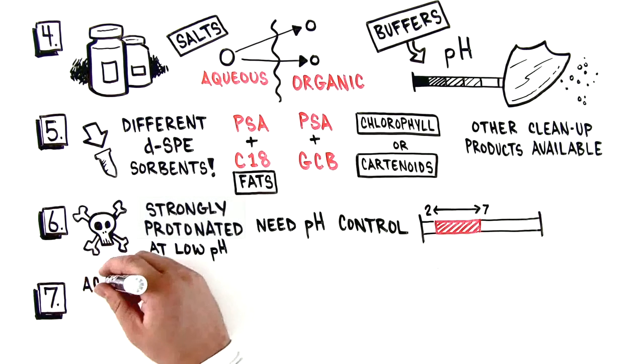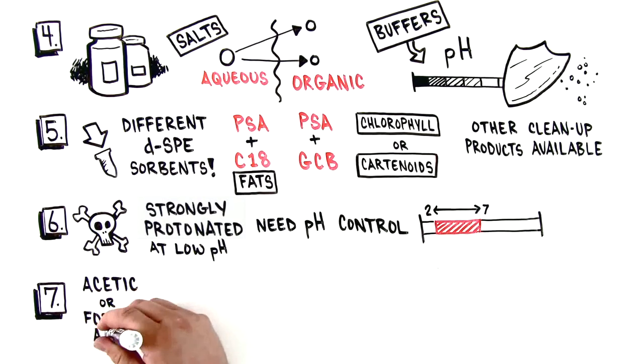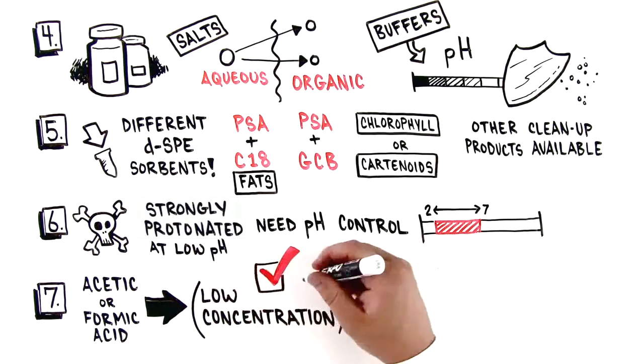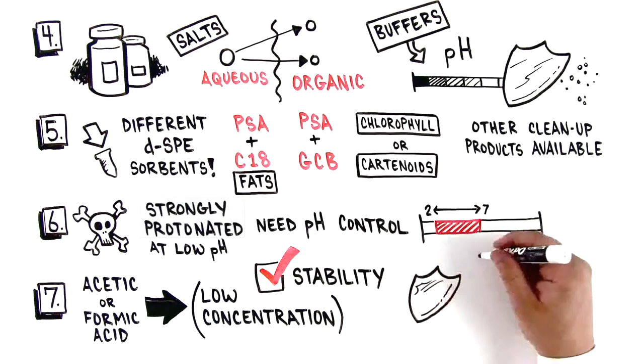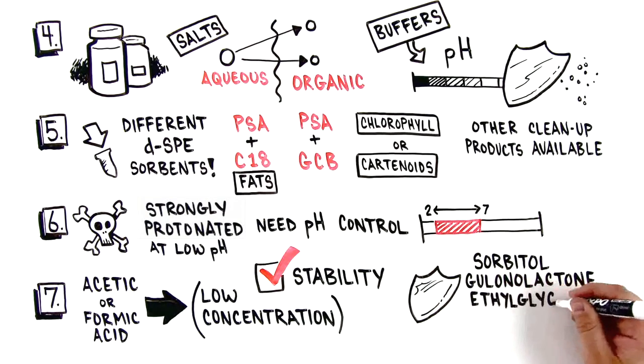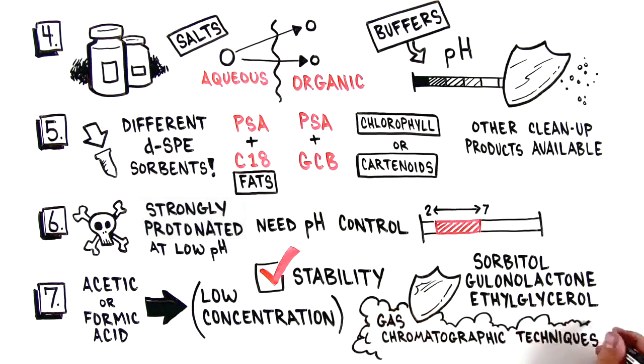Number seven, after sample preparation, acetic or formic acid can be added at low concentrations to ensure stability of base-sensitive pesticides. Analyte protectants like sorbitol, gulonolactone, or ethylglycerol are sometimes added prior to analysis by gas chromatographic techniques.